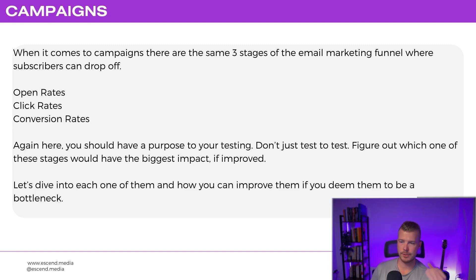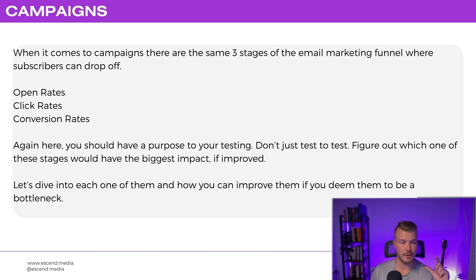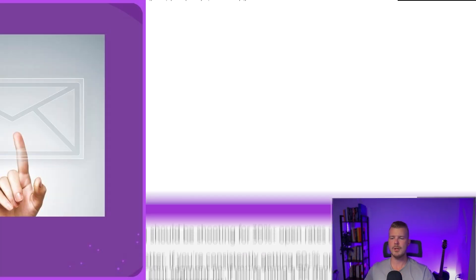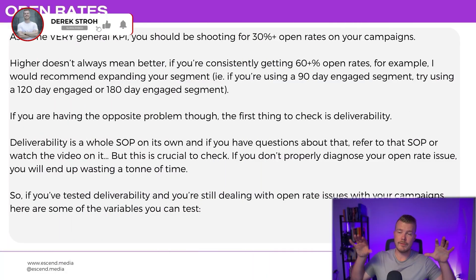When it comes to campaigns, the same three stages in the email marketing funnel exist: open rates, click rates, and conversion rates. You shouldn't just test to test — figure out which of these stages will have the biggest impact if improved, and focus there.